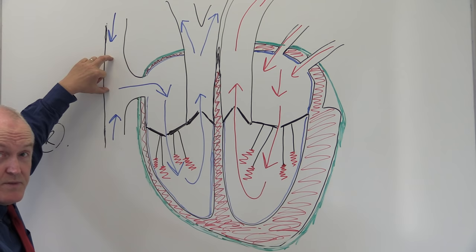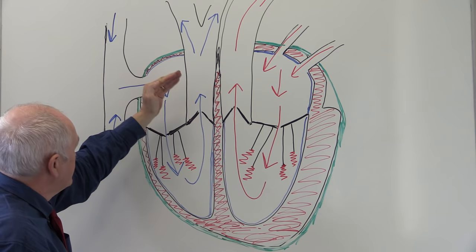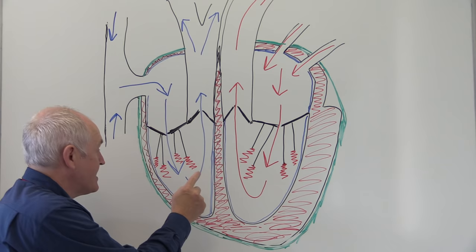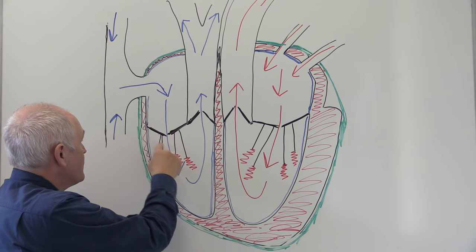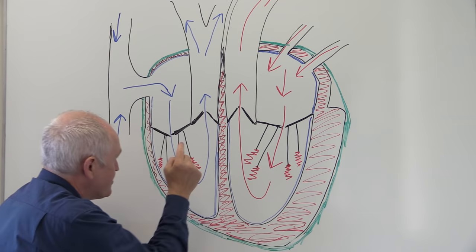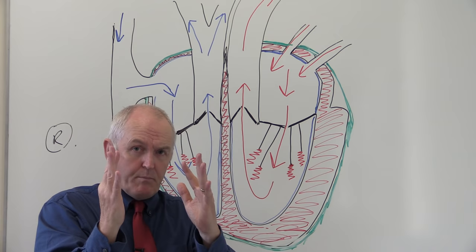The same process occurs on the right side: blood comes from the superior and inferior vena cava into the right atrium, most flows through passively, then for the next cardiac cycle the atria contract generating the atrial kick, pushing blood through at higher pressure. The right ventricle contracts, decreasing volume and increasing pressure, which slams shut the tricuspid atrioventricular valve, and at the same time the increased pressure opens the pulmonary semilunar valve, allowing blood to go up to the lungs.